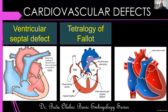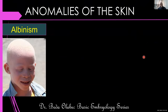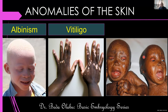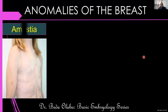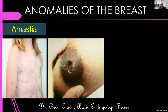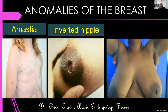You may also have coarctation of the aorta — where coarctation means narrowing, so the aorta has a narrow segment. Skin malformations include albinism, vitiligo, and ichthyosis — excess keratinization. Malformations affecting the breasts include amastia where the breast does not form in a female, inverted nipple, and polymastia where a woman has extra breasts — meaning an additional independent breast, not just enlargement of the existing one.